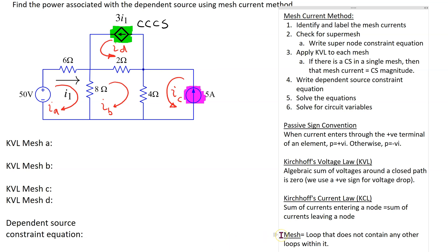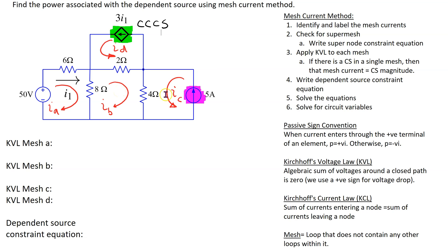Recall that a mesh is a loop that does not contain any other loops, and this circuit has four meshes. These have been labeled IA, IB, IC, and ID. We have assumed a clockwise direction for two of the meshes and an anticlockwise direction for the remaining meshes.